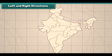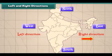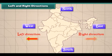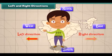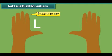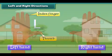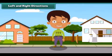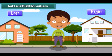Left and right directions. In addition to north, south, west and east, we also use left and right directions to locate a place. We use our hands to indicate the left and right directions. The hand that makes the letter L when the index finger and thumb are stretched out is our left hand, and the other one is our right hand. The places towards our right hand are said to be on the right and those towards our left hand are said to be on the left.